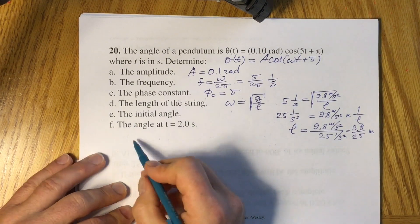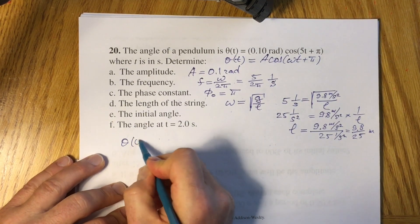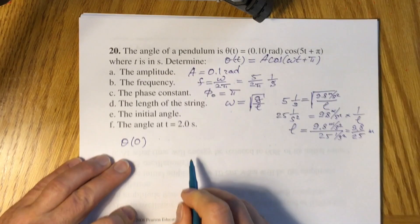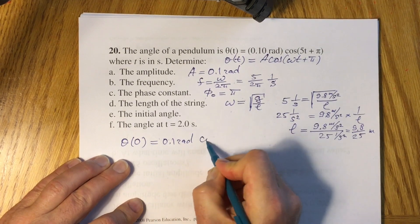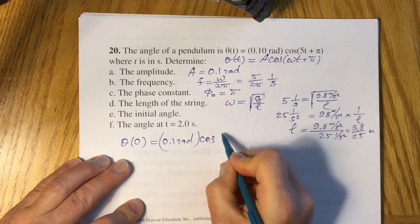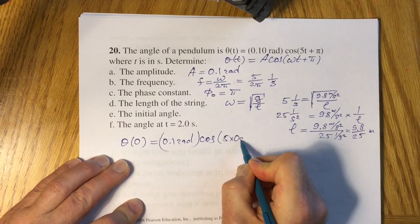Now initial angle. You will find your initial angle if you put t equals 0 in your equation. You will have 0.1 radians times cosine of 5 times 0 seconds plus pi.